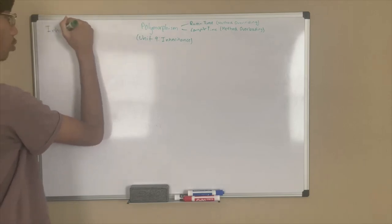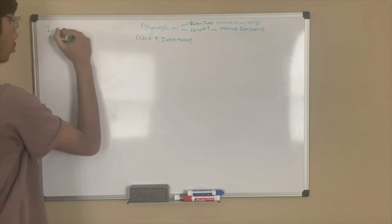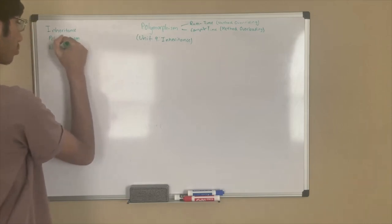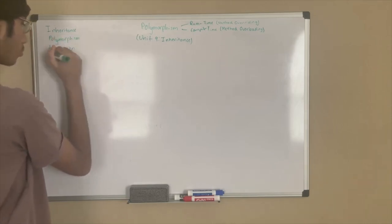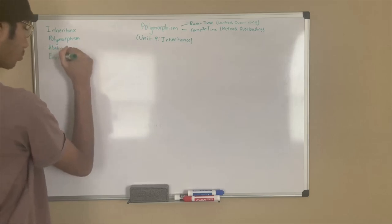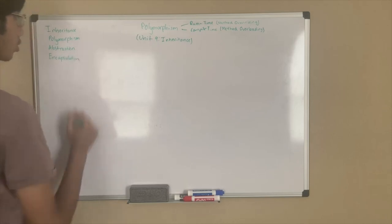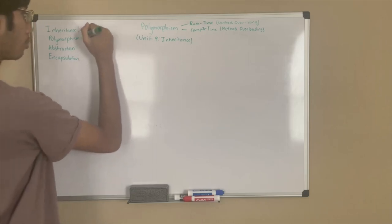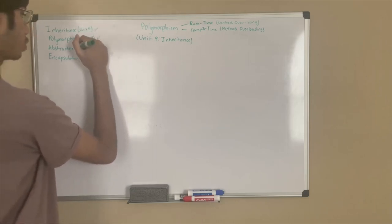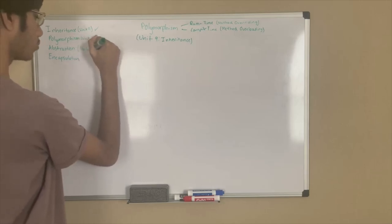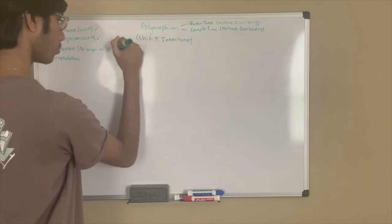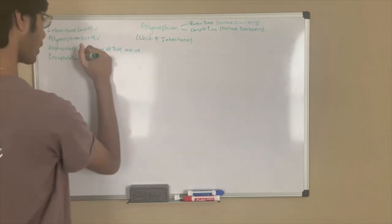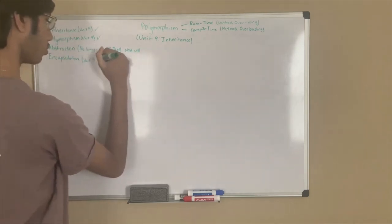Let's go to our four core OOP concepts. Inheritance — already covered in unit nine, check. Polymorphism — unit nine, check. Abstraction is no longer present, and that's going to be next. Encapsulation is unified writing classes, which is going to be soon.